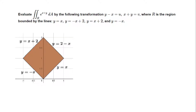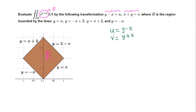Evaluate this double integral in the region R by the following transformation. This region is not that nice, and the integrand e raised to x plus y is not easy to integrate. We make the transformation: u equals y minus x, and v equals x plus y. So the integrand e raised to x plus y immediately becomes e raised to v.